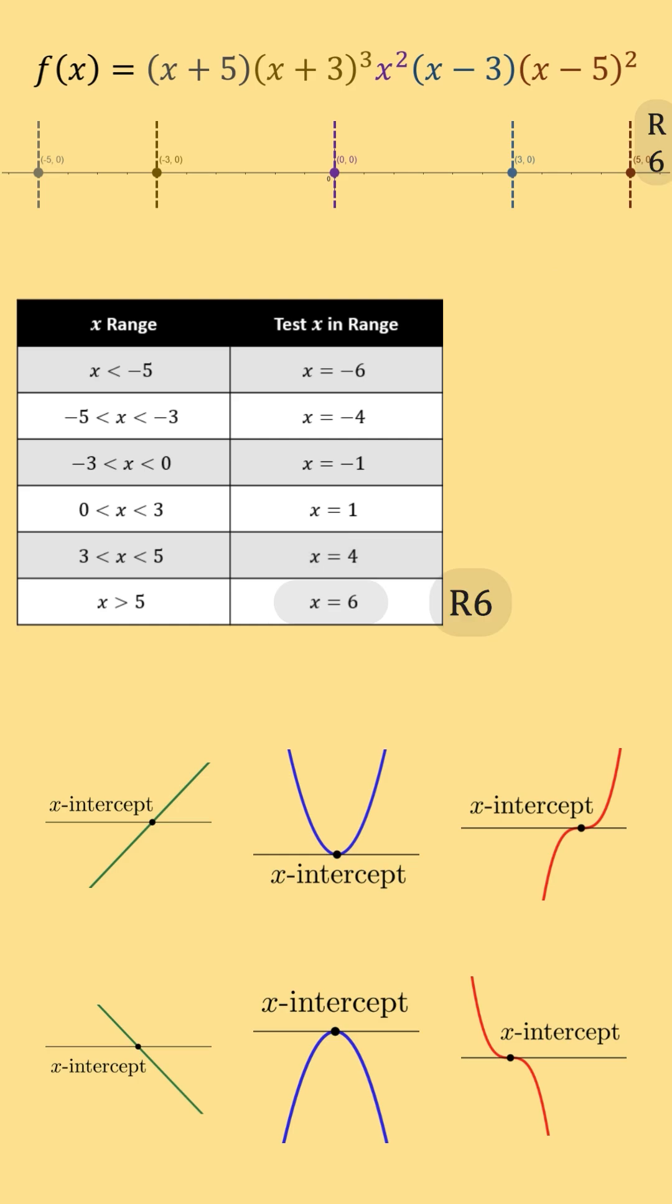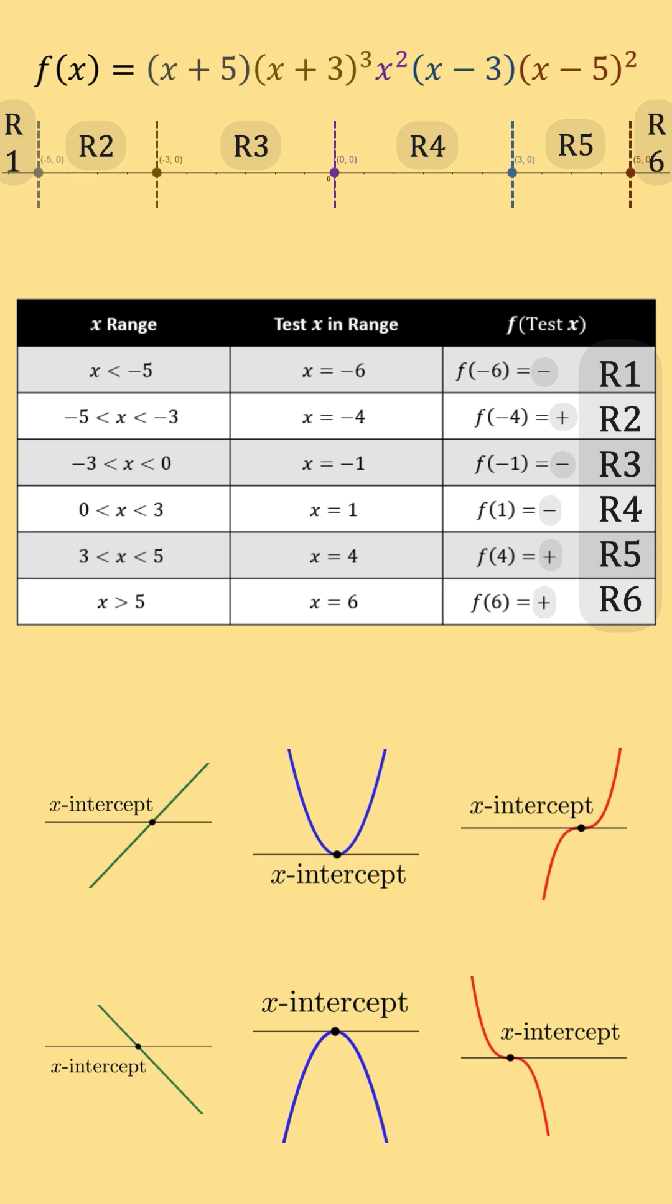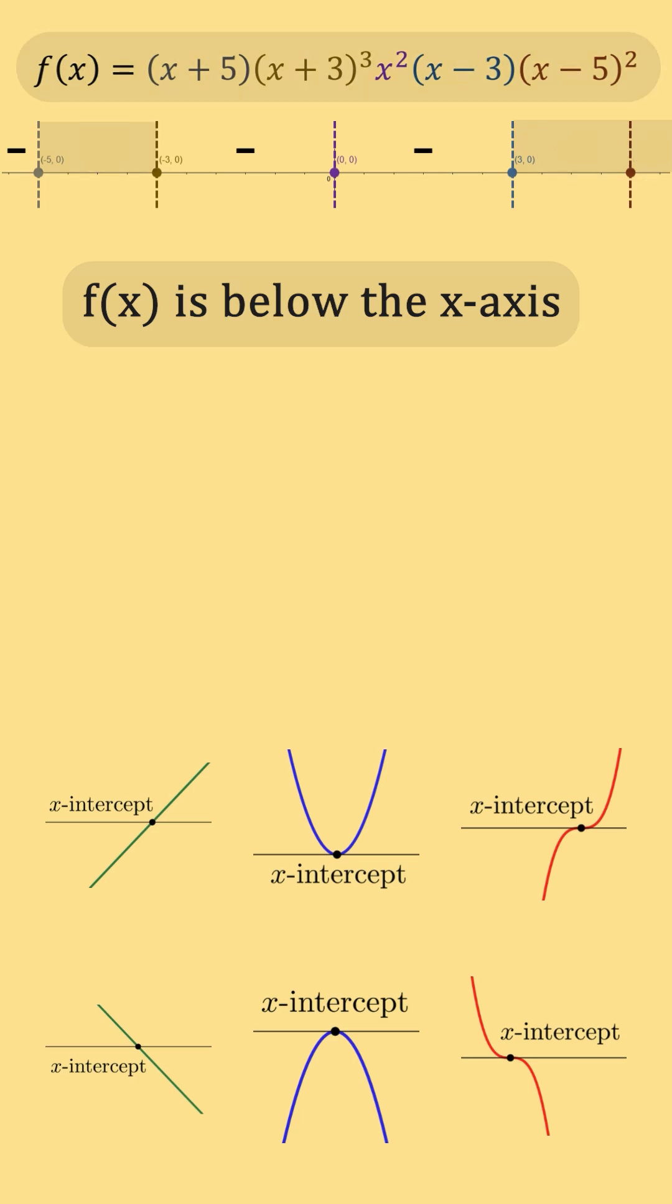We pick a test point from each range and then plug them into f(x) to get these values. The sign of these values is what matters the most. The sign of these values tells us the sign of f(x) within each of these ranges. Our function is above the x-axis in ranges that have a positive symbol. Our function is below the x-axis in ranges that have a negative symbol.